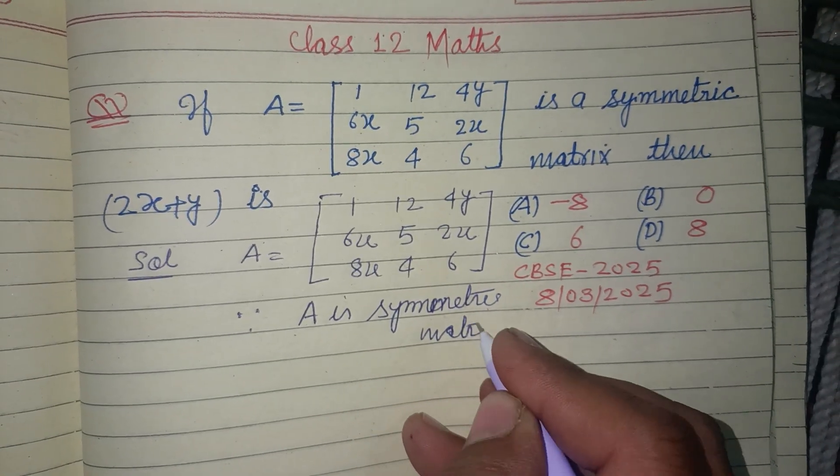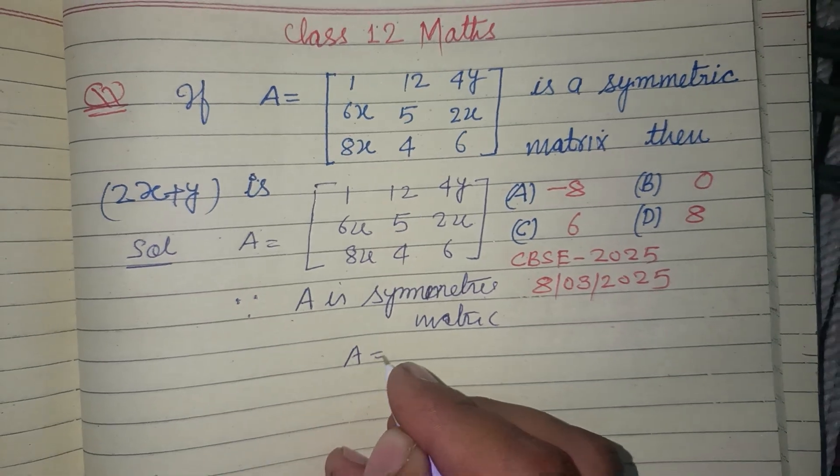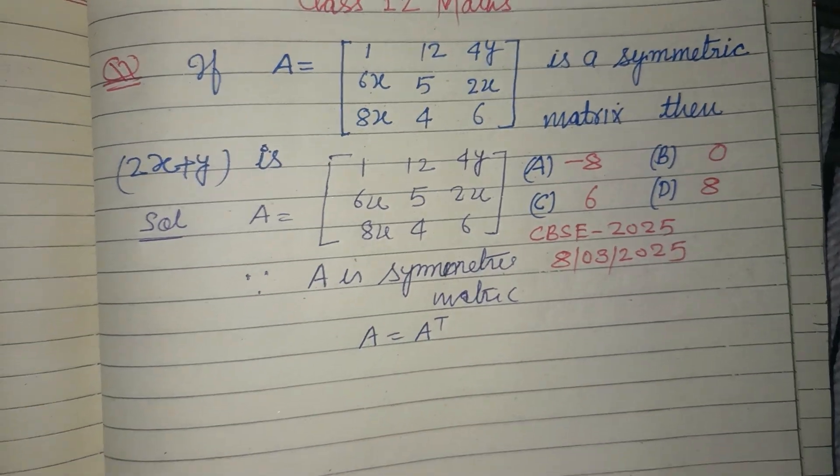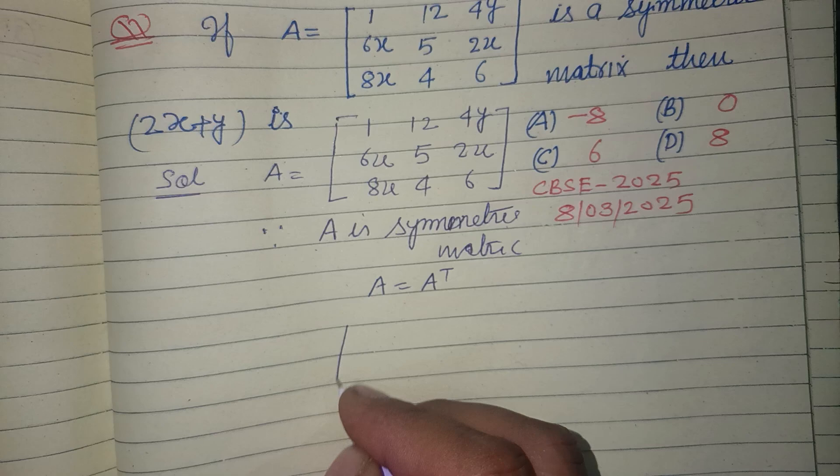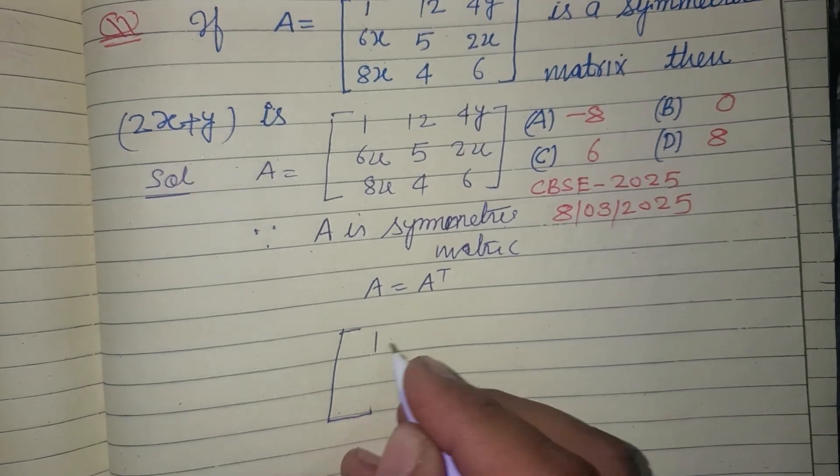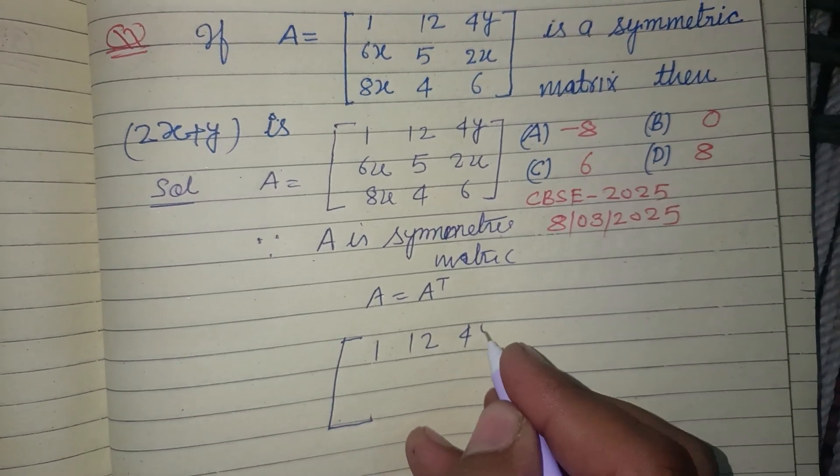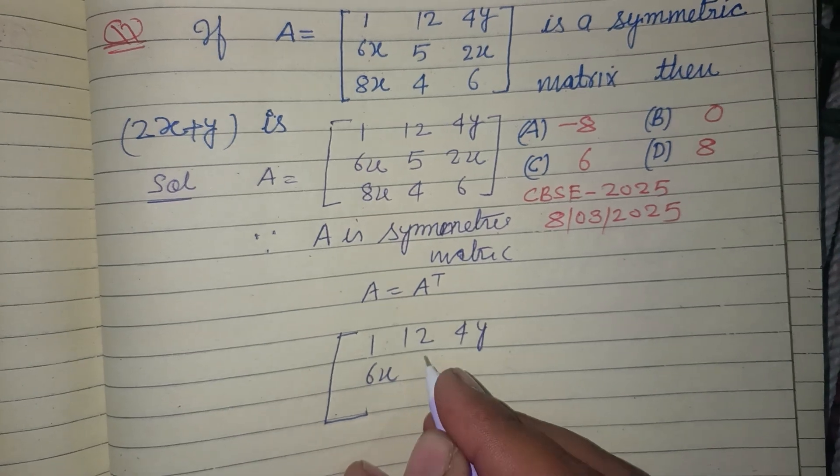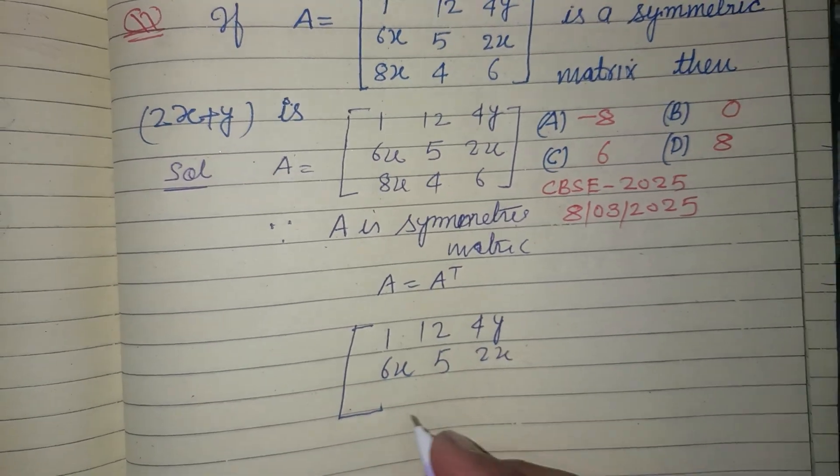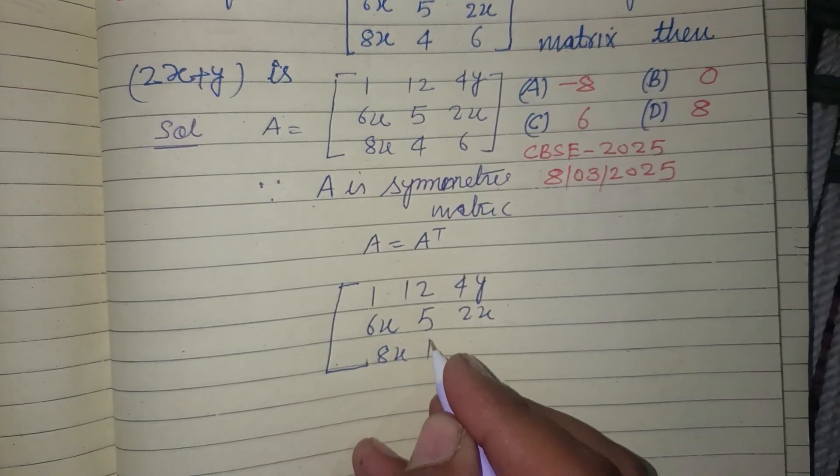then A equals A transpose. So A is [1, 12, 4y; 6x, 5, 2x; 8x, 4, 6]